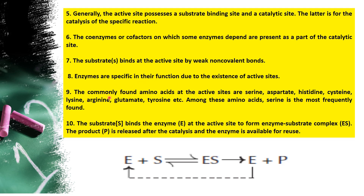The ninth point: some particular amino acids are present in the active site. They are serine, aspartate, histidine, cysteine, lysine, arginine, glutamate, and tyrosine. These amino acids belong to groups such as hydroxyl group amino acids, sulfur-containing amino acids, basic amino acids, and acidic amino acids. Lysine and arginine are basic; glutamate is acidic; tyrosine is a hydroxyl amino acid. The COOH, NH2, OH, and SH groups present in these amino acids undergo transformation in reactions, helping cofactors and coenzymes to facilitate changes from substrate to product.